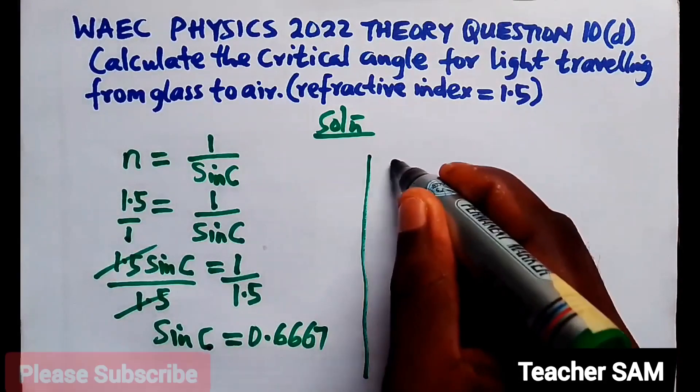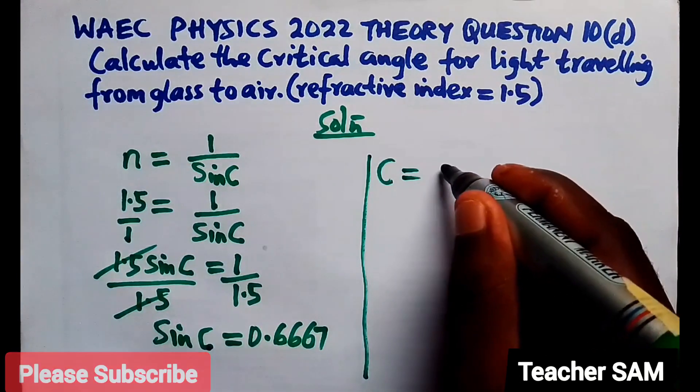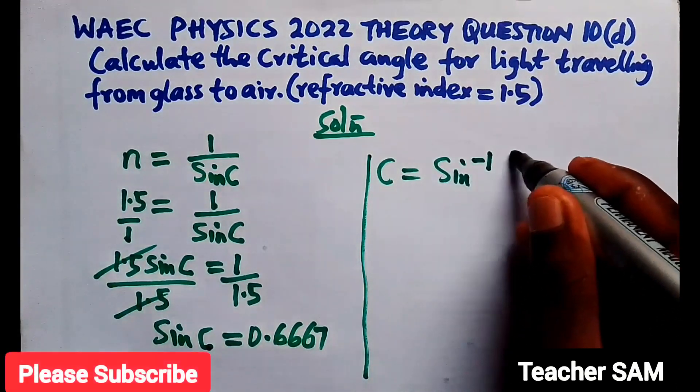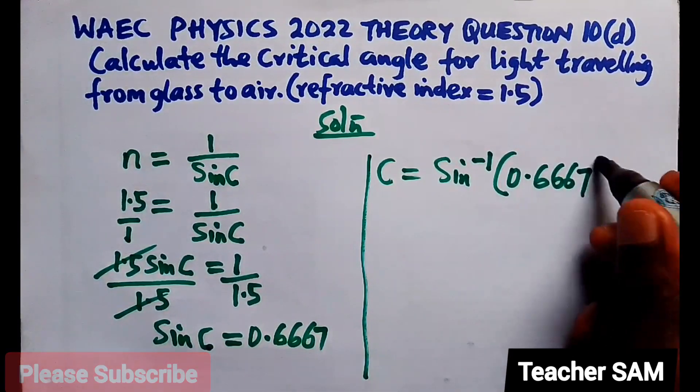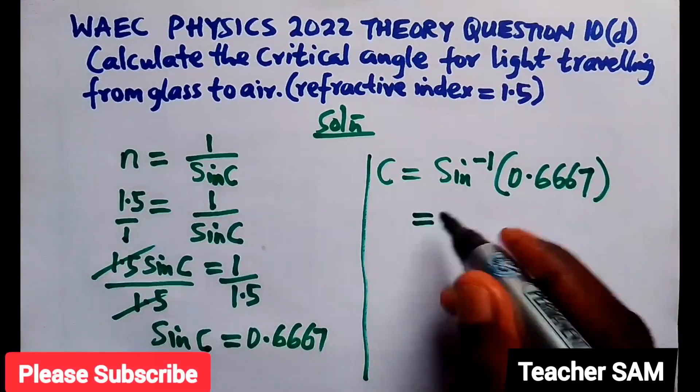Sine inverse of 0.6667 gives us 41.8 degrees approximately. This is not the actual value, just approximated to one decimal place.